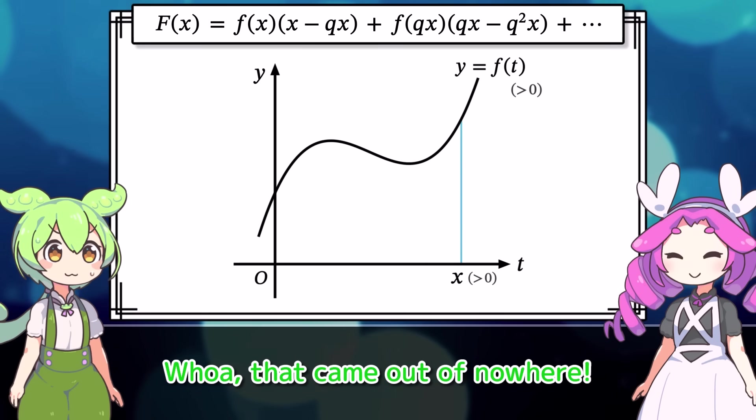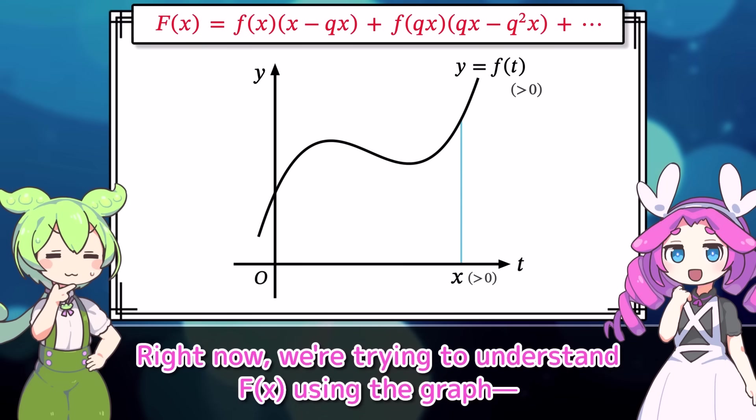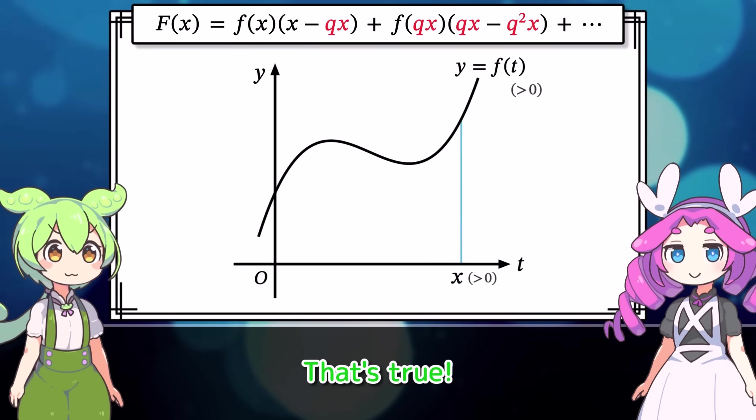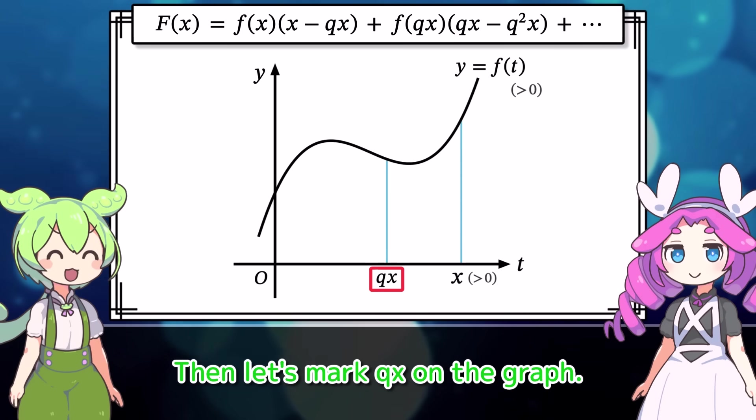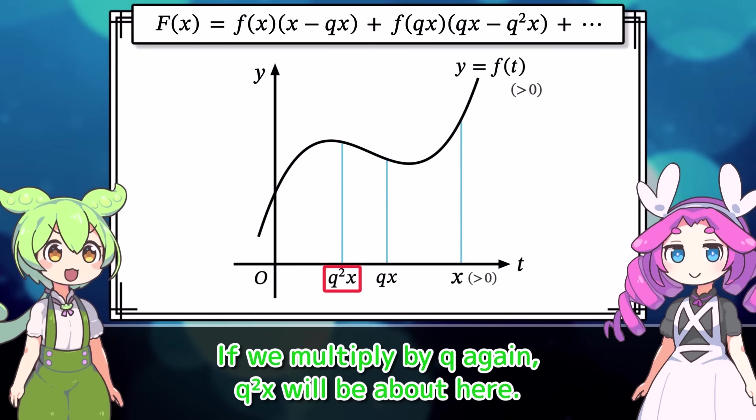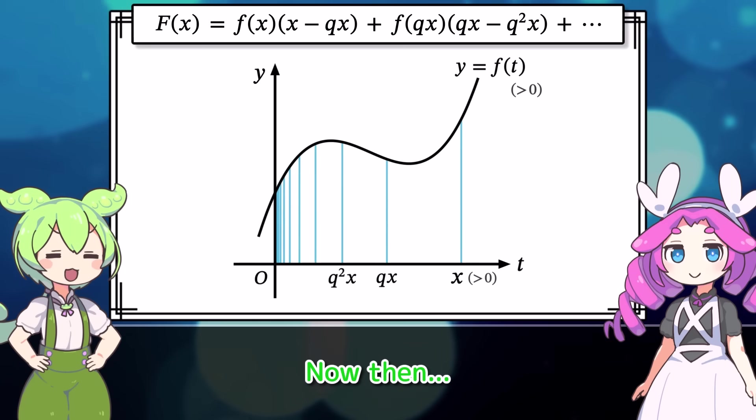Um, what should I do? Right now, we're trying to understand capital F of x using the graph. And in the expression for capital F of x, qx and q squared x appear. That's true. Then let's mark qx on the graph. We'll say qx is around here. If we multiply by q again, q squared x will be about here. And this pattern continues infinitely.